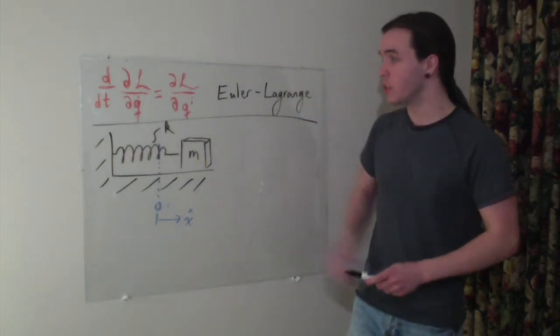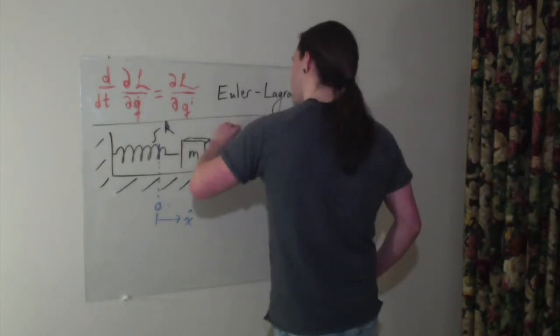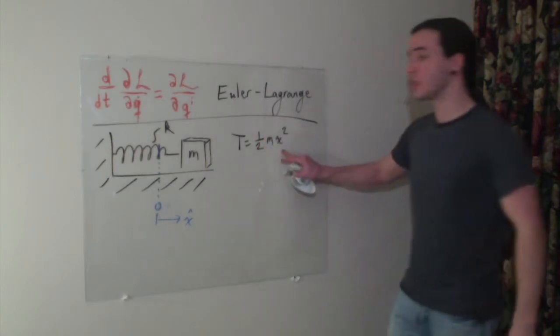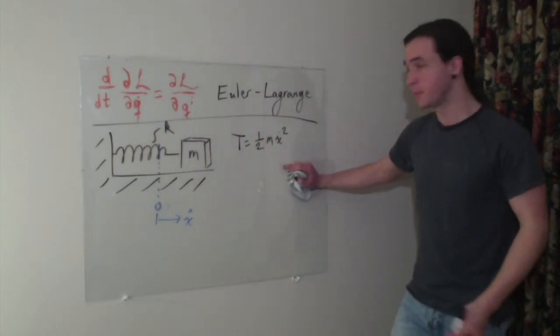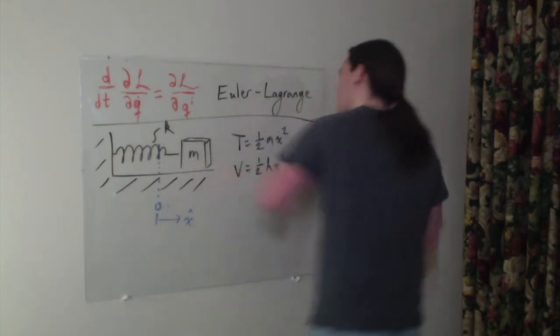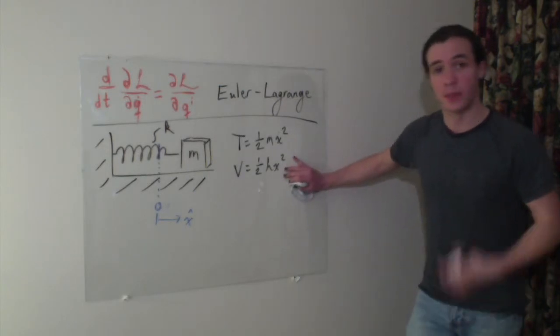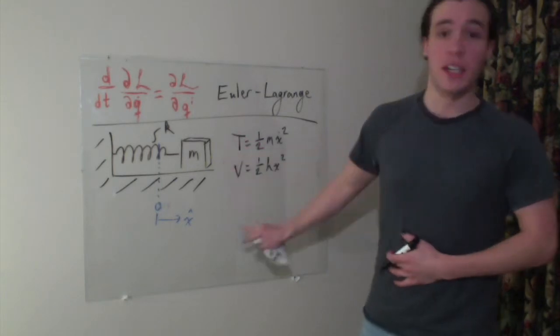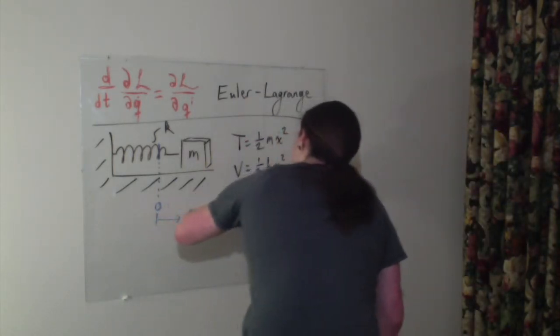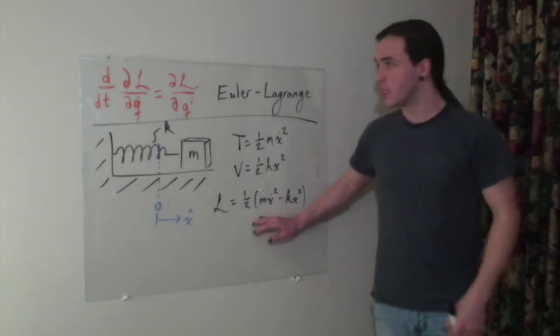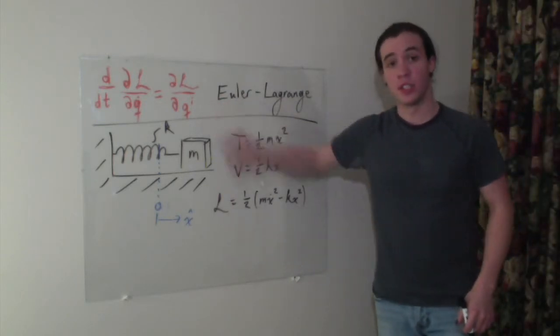So with this we can derive a very quick Lagrangian, because we know the kinetic energy is just going to be one-half m x-dot squared, where x-dot is the velocity, one-half m v-squared. And the potential energy is going to be one-half k x-squared, because that's the potential energy of something on a spring. So that means that our Lagrangian is just going to be the kinetic minus the potential energy, which gives us a Lagrangian one-half m x-dot squared minus k x-squared.